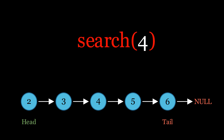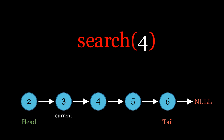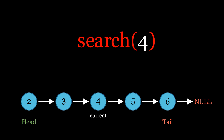Let's say you want to search for the element containing data 4. First, we will create the current variable and start by checking its data. If the data doesn't match 4, the algorithm will move current one step forward and continue checking the next node. This process will continue until either the data matches 4 or we reach the end of the list. If we find the element, we return true; otherwise we return false once we have traversed the entire list.